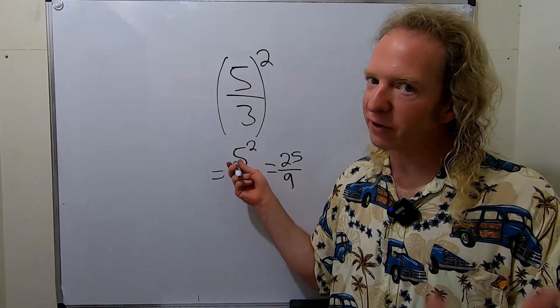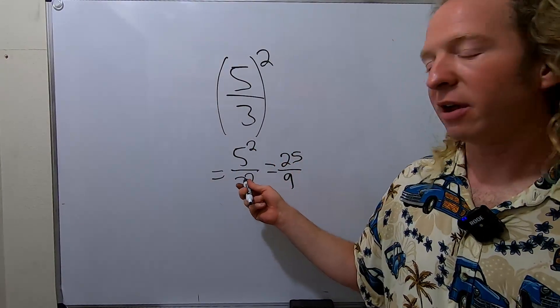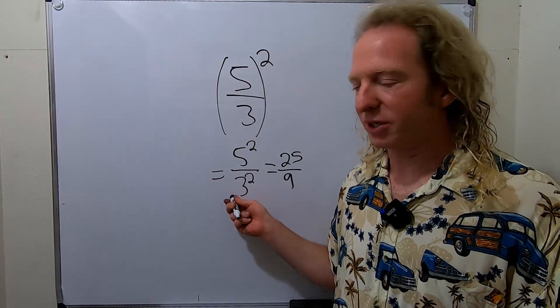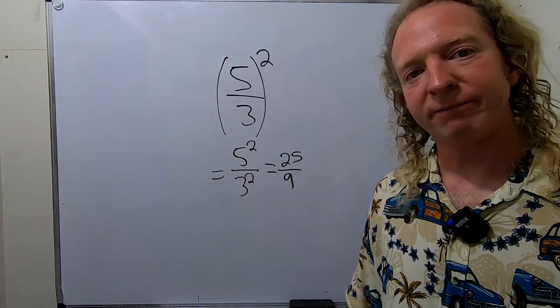Remember, 5 squared is just 5 times 5, which is 25, and 3 squared is 3 times 3, which is 9.